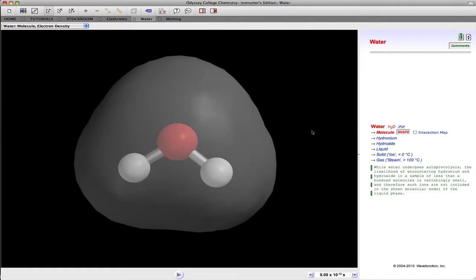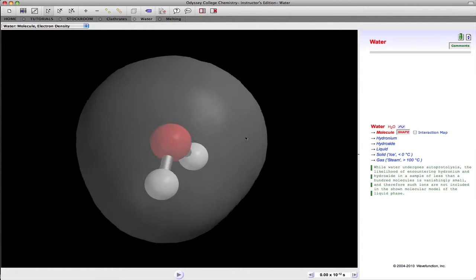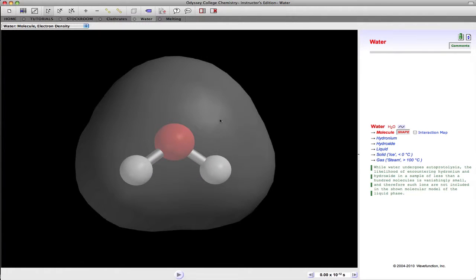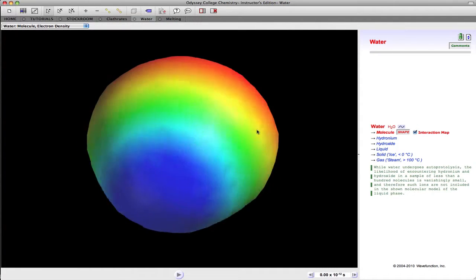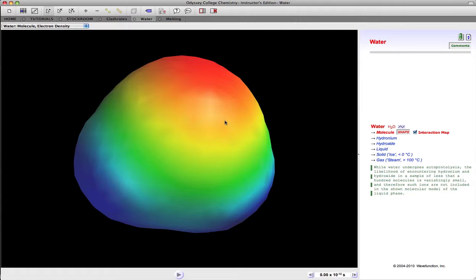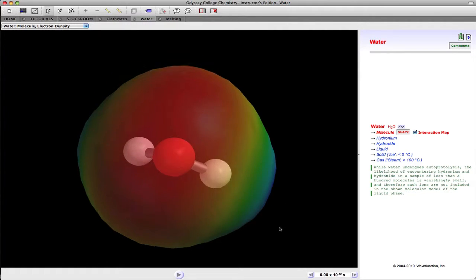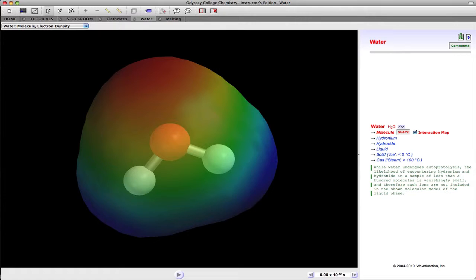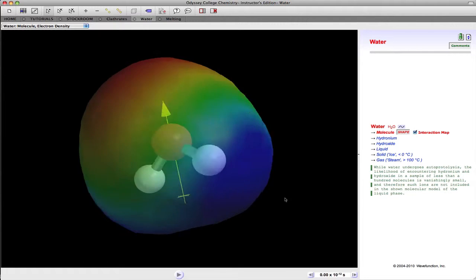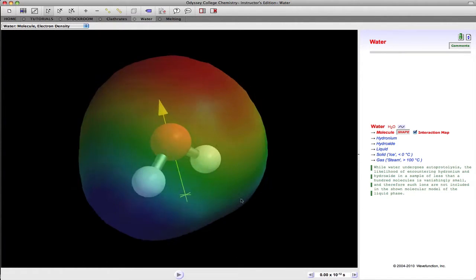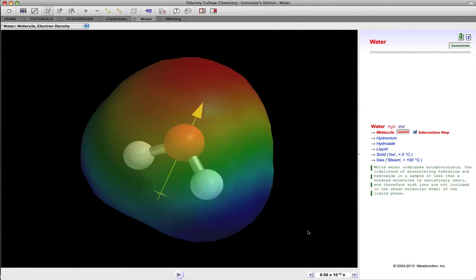We can see the electron density isosurface model very nicely here by clicking on that. Now, the electrostatic potential map can be seen like so. If you go to the model menu item at the top, you can make the electrostatic potential map transparent and see the ball and stick model inside. You can also go to the same model menu and turn on the dipole represented as a vector here. So it's a really nice way of being able to represent molecules.